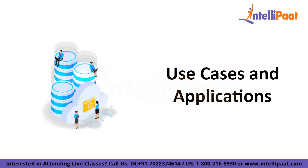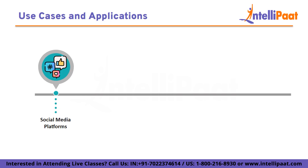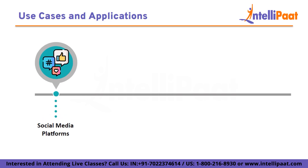Now we have some of the use cases and applications of Apache Cassandra. First, we have social media platforms. Cassandra can handle massive amounts of user-generated content such as posts, comments, likes, and shares with quick access and real-time updates. It ensures high availability and scalability, allowing social media platforms to accommodate millions of users and their interactions.